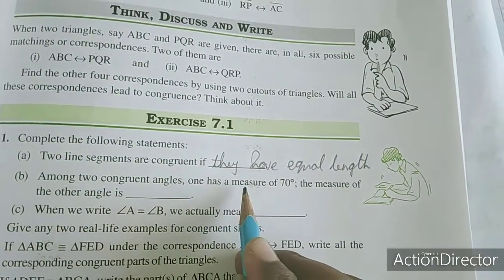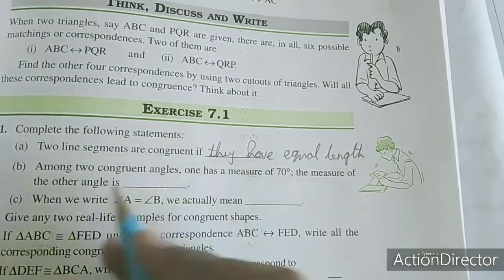Part b: Among two congruent angles, one has a measure of 70 degrees. The measure of the other angle is 70 degrees.